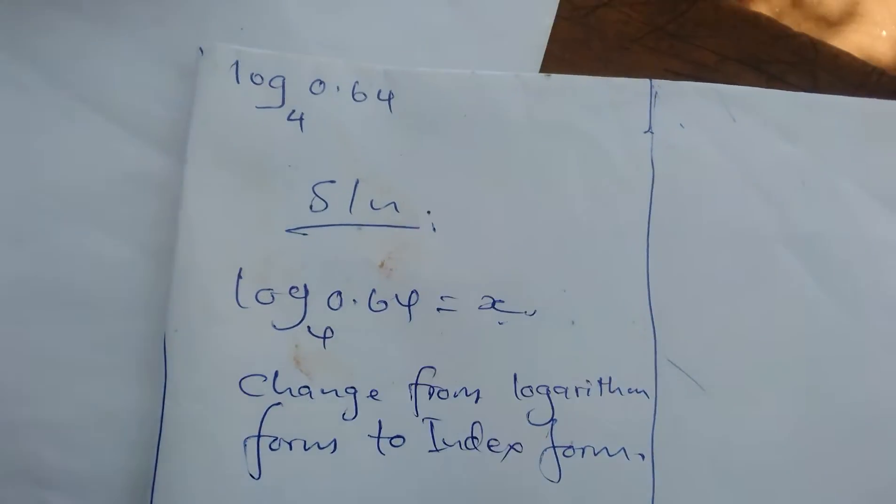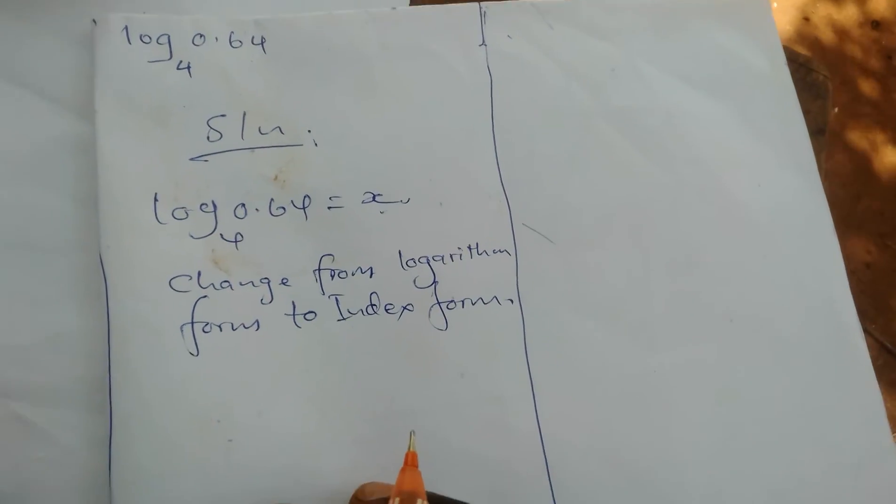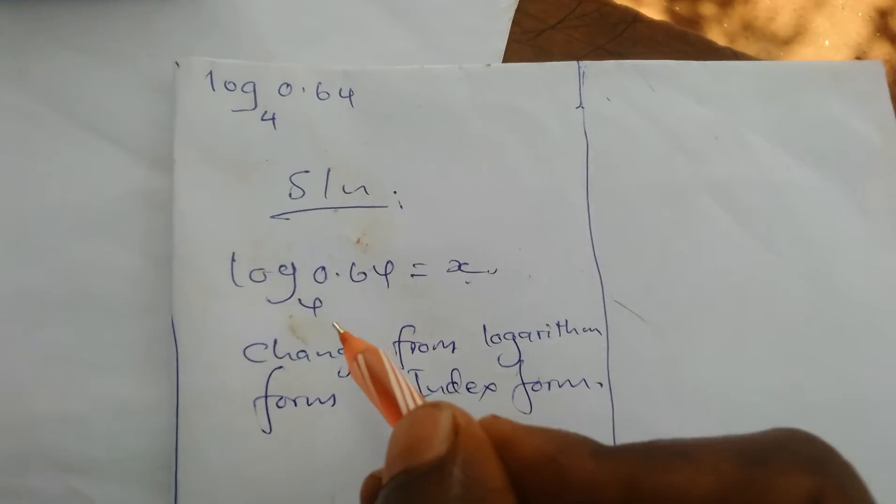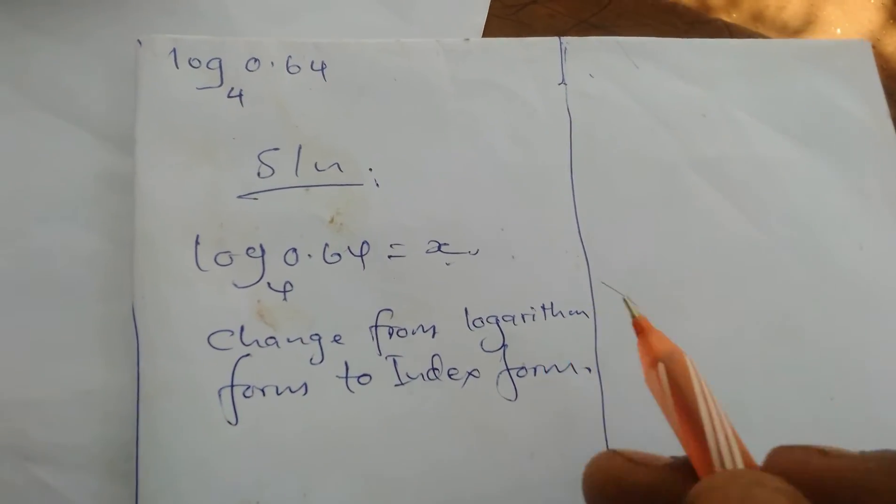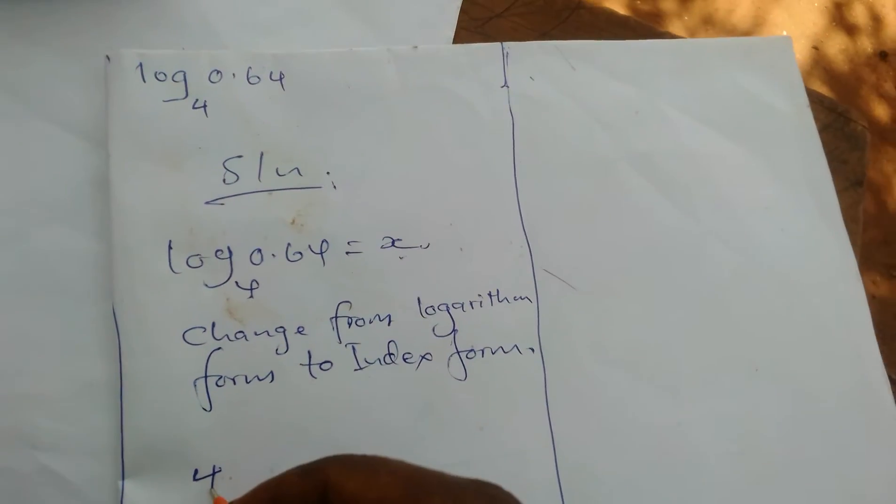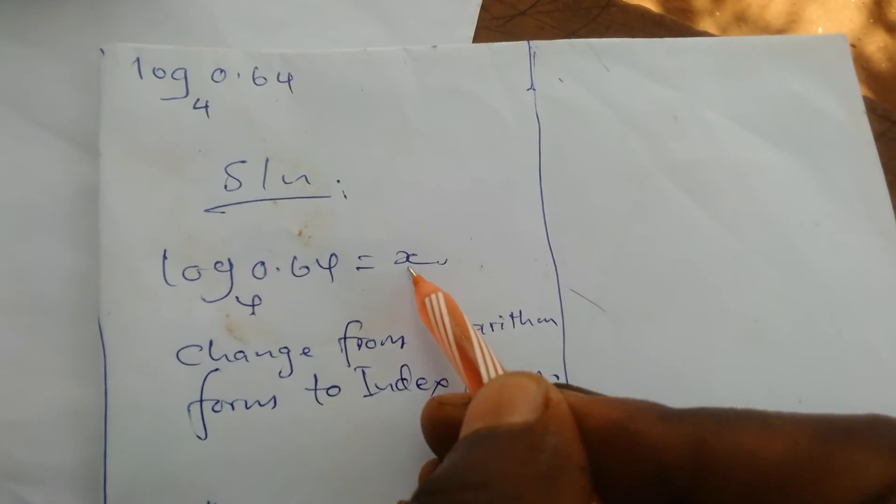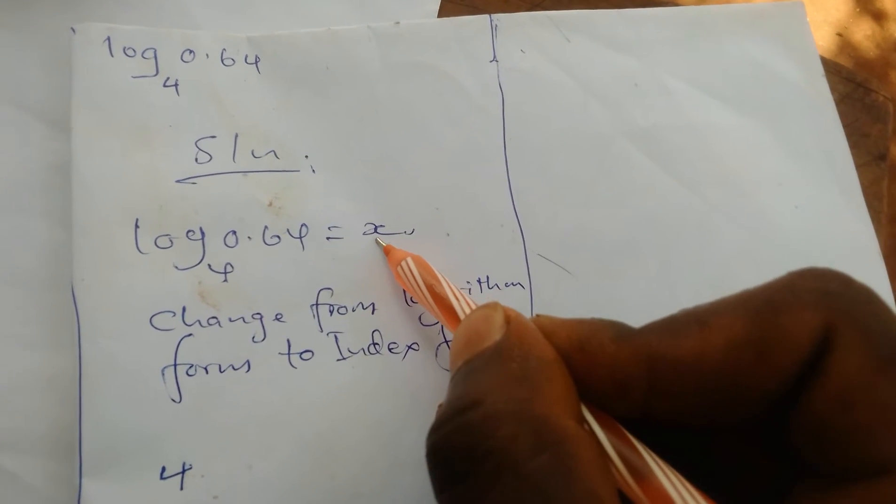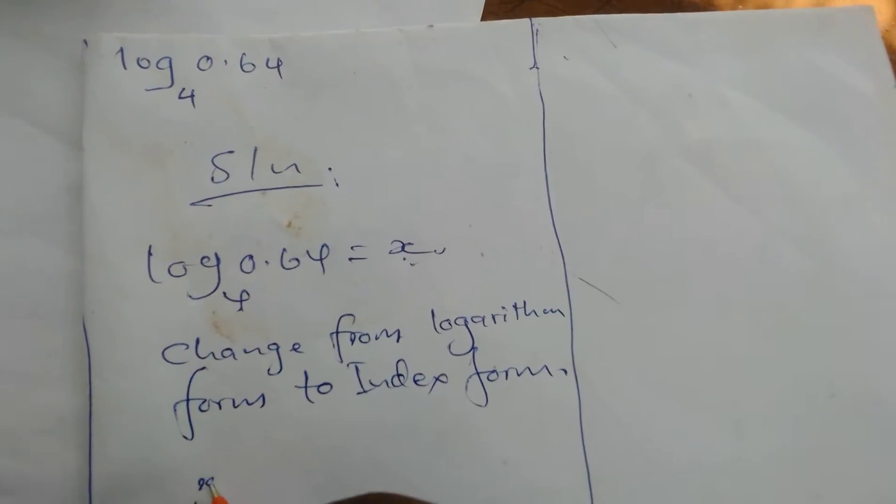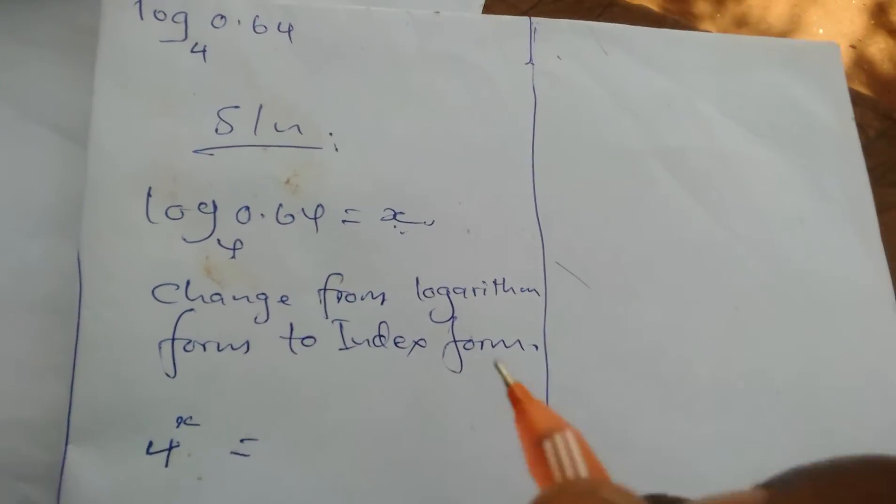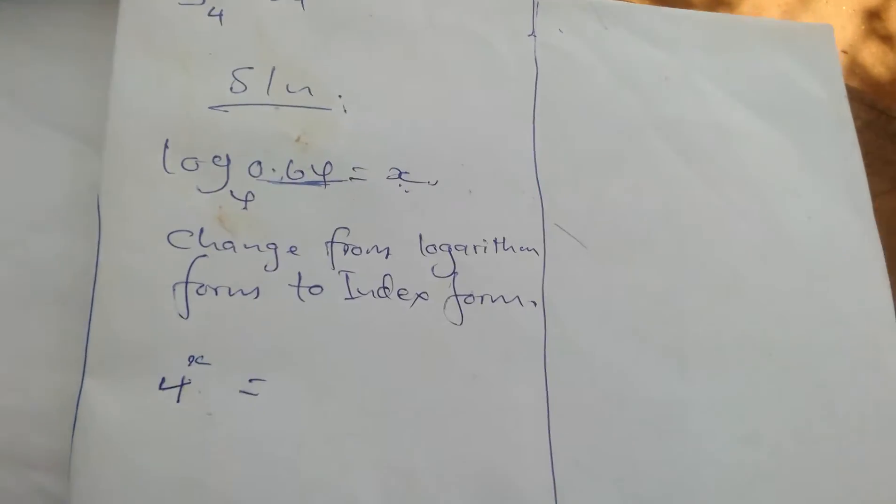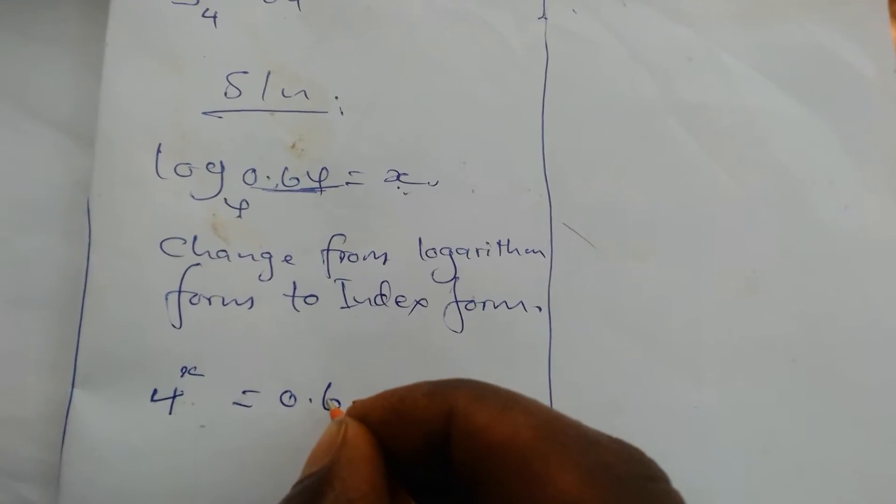When we change it from logarithm form to index form, you take this base, then you take this number on the right-hand side of the equal sign as the power. Then you equate it to this number, 0.64.